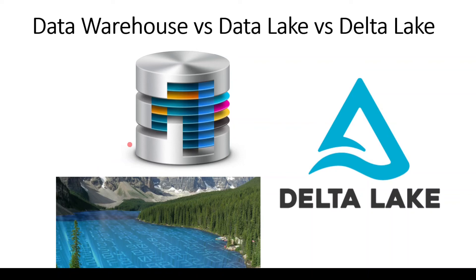Another major problem with data lake is that when we are processing certain data — let's say we are loading certain data or doing some transformations — and the process fails in between, the process will leave the system in a corrupted state. That is also one of the major problems with data lake. If you consider data warehouse, if we are processing 100 records and there is some problem, the entire record would be rolled back or the entire process would be uncommitted. But coming to data lake, if we have partially done certain transformations and the process fails, it will leave the system as-is in the corrupted state.